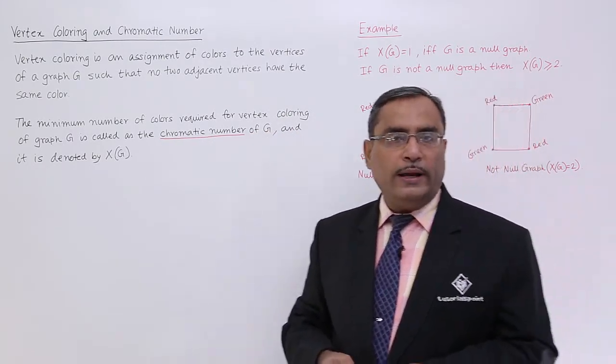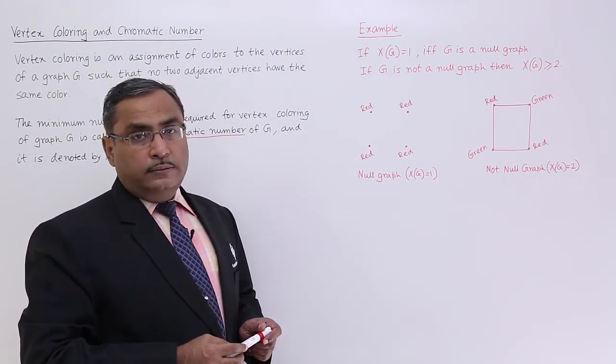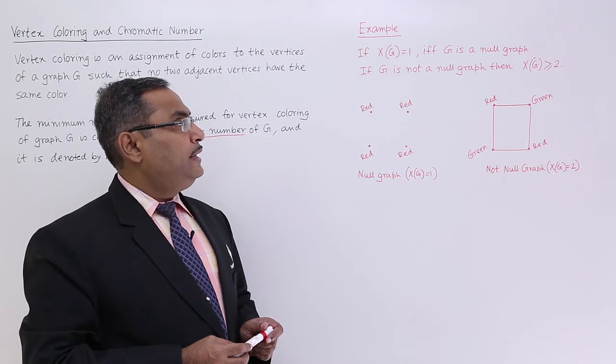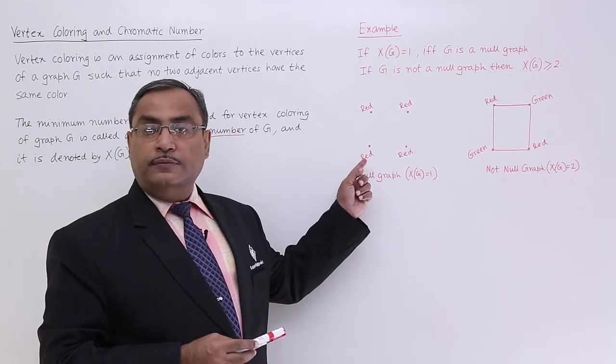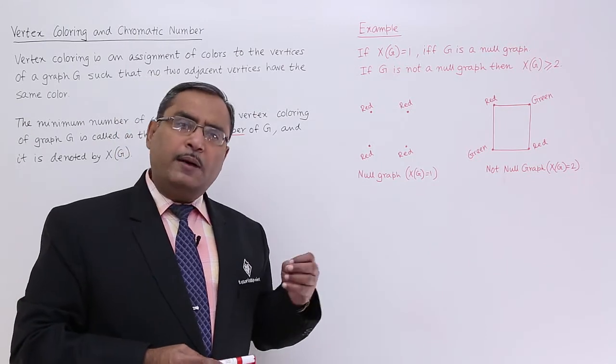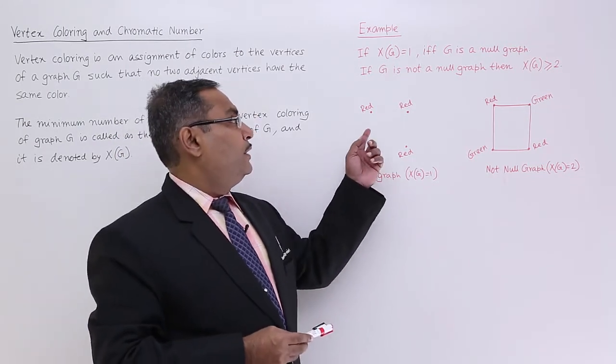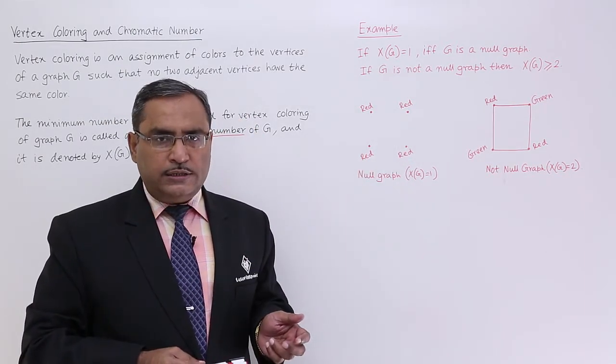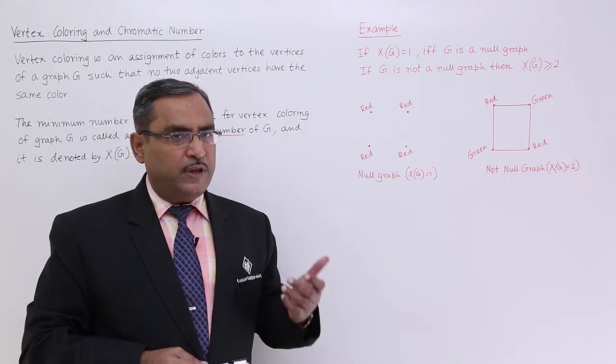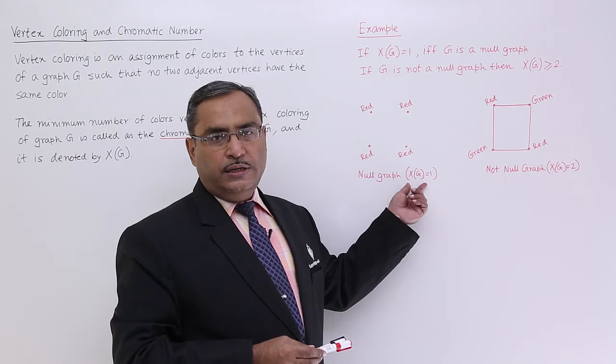Now, let us go for one example. If χ(G) is equal to 1, that is possible if and only if G is a null graph. This is a null graph. We are having no edges. We can have multiple vertices, but there will be no edge. For each and every vertex, I can put the same color because as there is no edge, vertices are not adjacent to each other. In case of null graph, χ(G) is equal to 1.